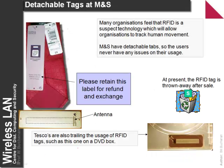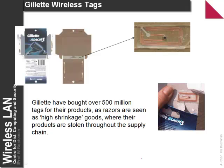An application of radio frequency systems is RFID, where we can fit small chips with antennas to give a unique identification. We can see a few examples here, where the antenna is built into a label for a tie, and also inside a Gillette wireless box.